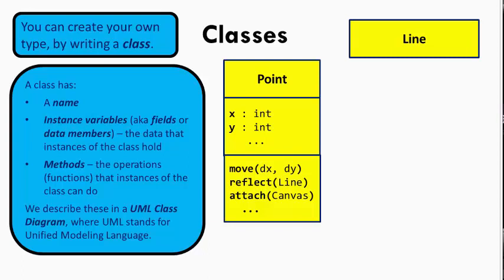Note that there can be many point objects in existence at the same time. We call those objects instances of the point class. All instances of the point class, as designed here, have instance variables called x and y, but each instance has its own value for its x and its y.